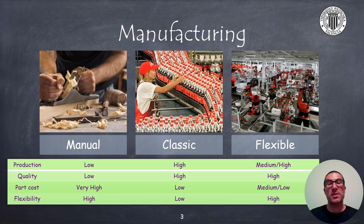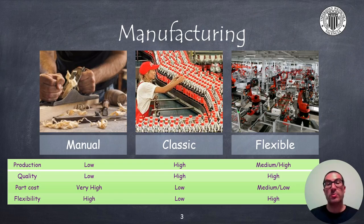Classic manufacturing, using specialized machinery for mass production, generally has high production and product quality, while its flexibility to adapt to changes in production is generally low. This type of production achieves low production costs per part. Finally, flexible manufacturing combines flexible manufacturing systems that allow medium or high production, with very good quality and medium or low cost per part. Unlike classic manufacturing, they can adapt to changes in production because the machinery is controlled by a computer, such as a CNC or a robot.